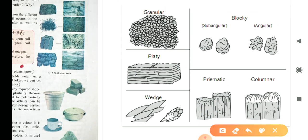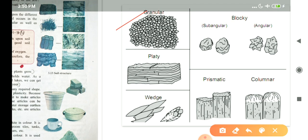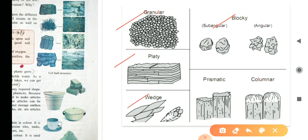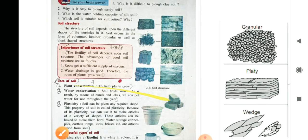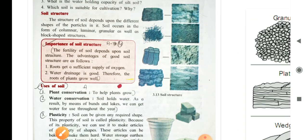First one is granular. Then, the next is blocky. See, different types of blocks are there. They have classified them as angular and subangular. Then, platy. Platy is your laminar, laminates. Then, wedge are sharp-shaped. Then, you have prismatic and you have the columnar. Now, let us go to the importance of soil structure.